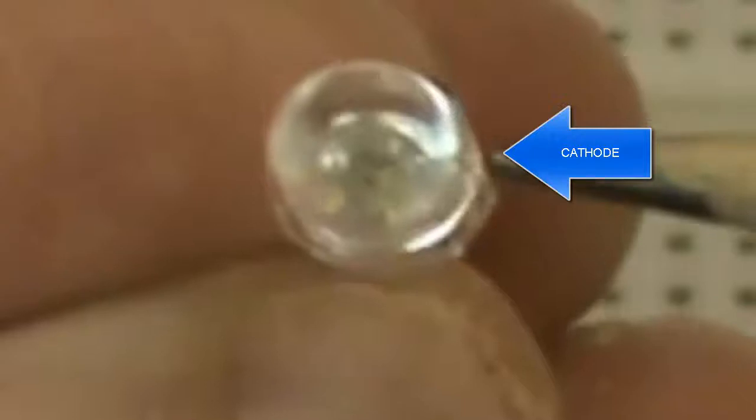Another way to tell is that there's a flat side typically on the LED and you can see it here. Not all LEDs have that either.